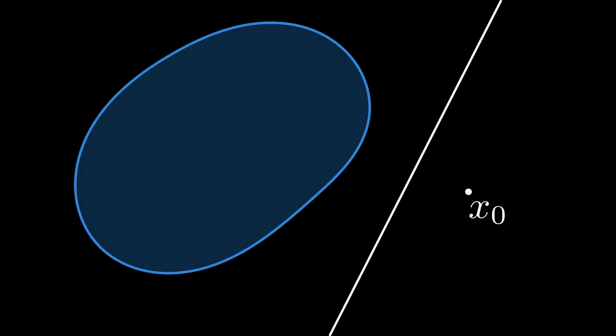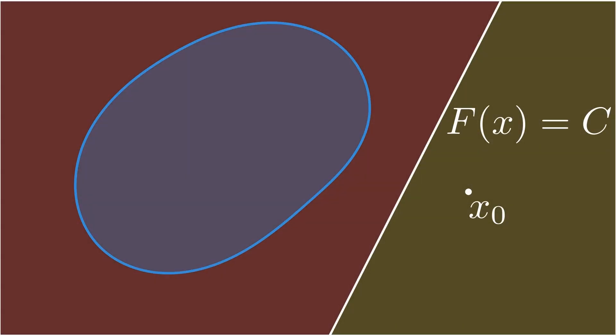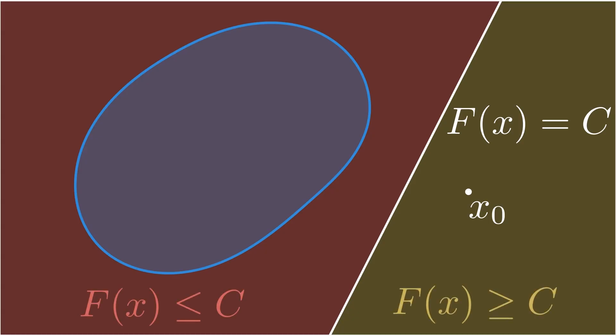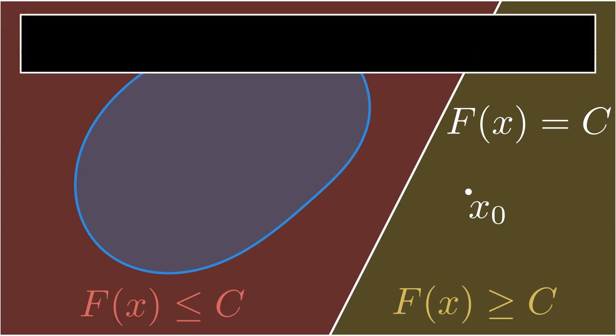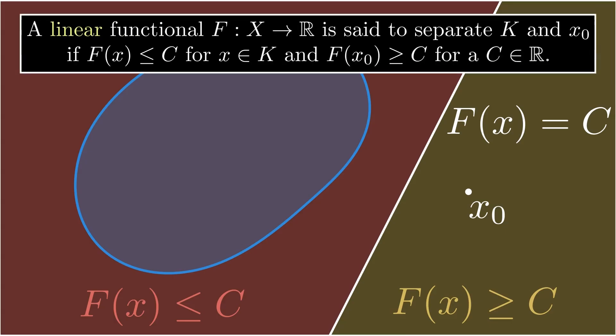So the separating line consists of all points where f is equal to C. The line separates the space into two sections. On the left side where the convex set is, f is lower or equal to C, and on the other side it's greater or equal to C. We say that a linear functional separates a set K from a point if f is lower or equal to C on K, and f of the point is greater or equal to C. This just means that the hyperplane induced by the linear functional separates the convex set and the point.